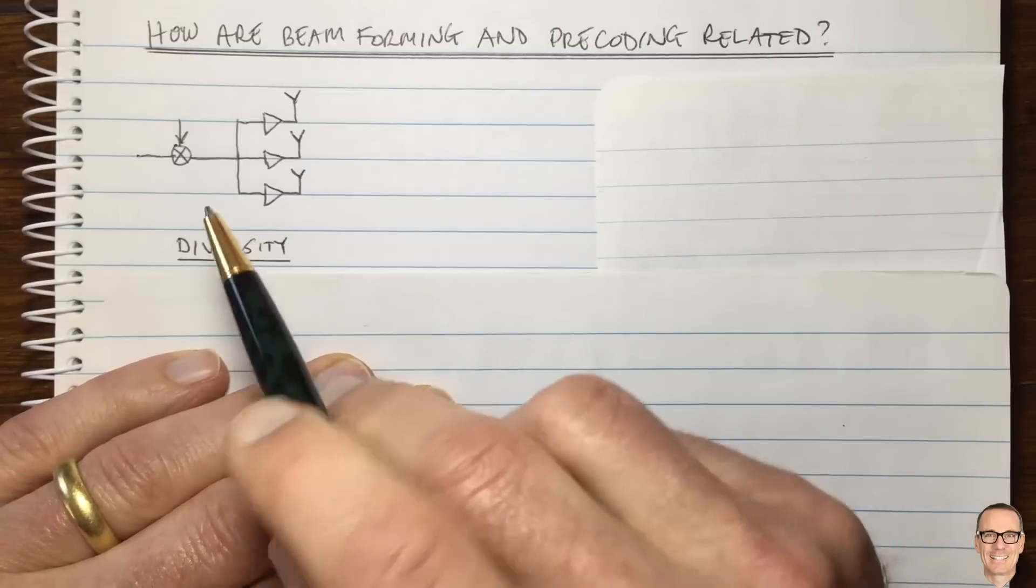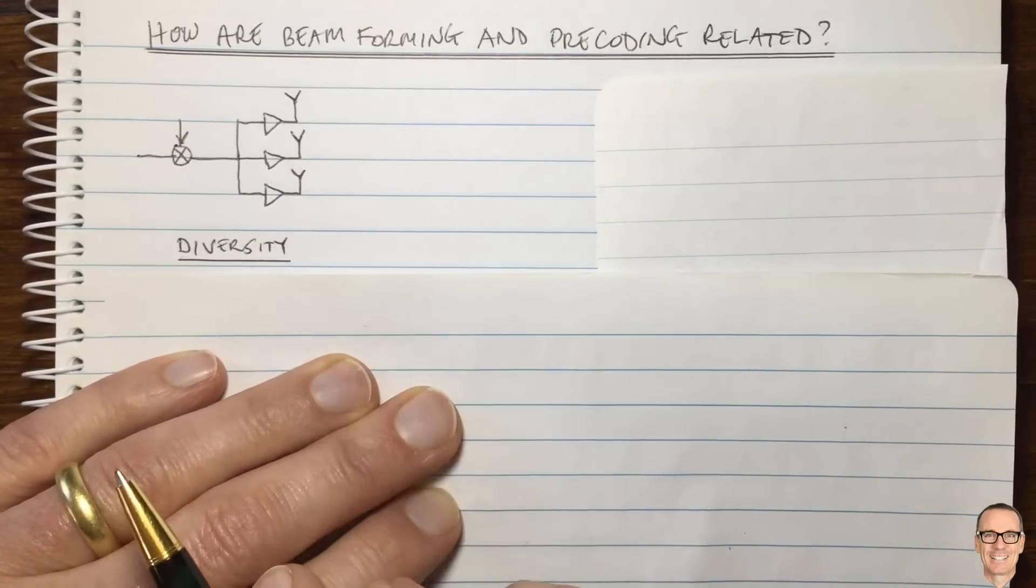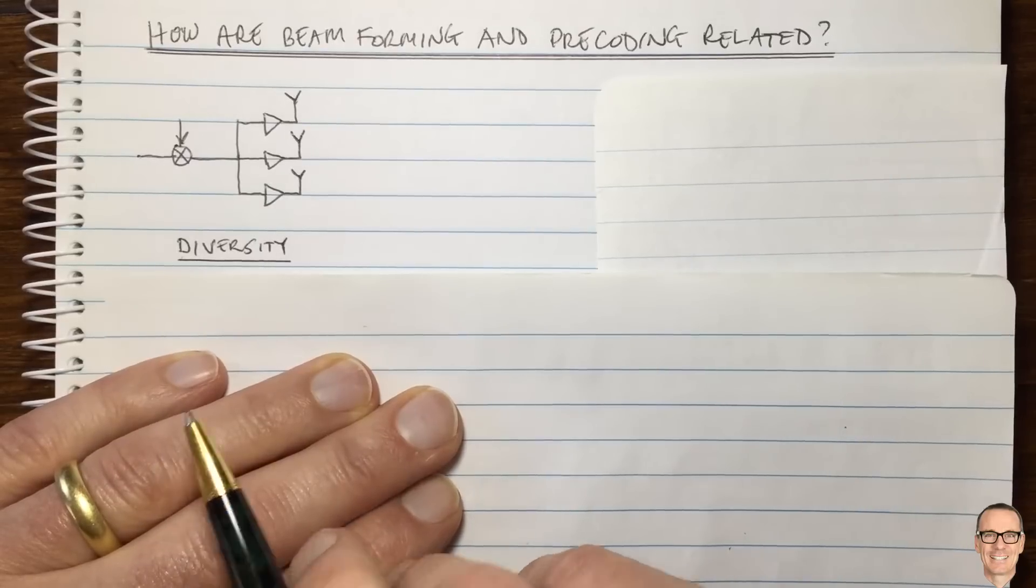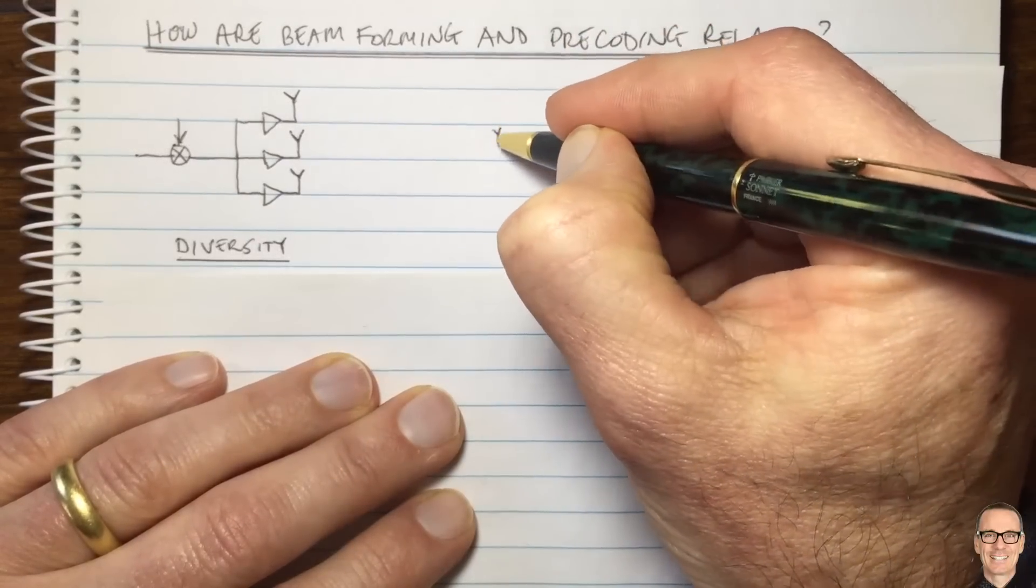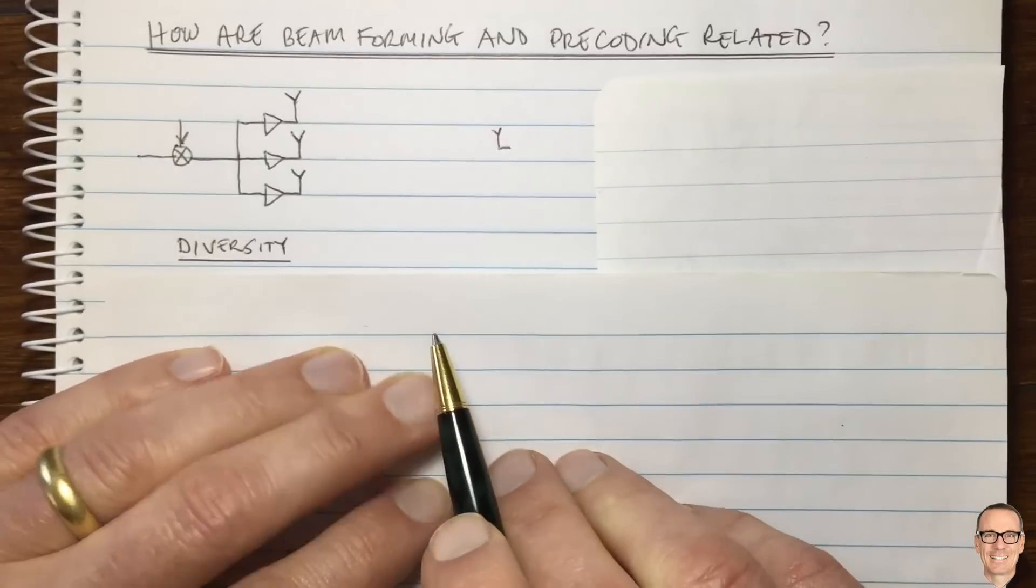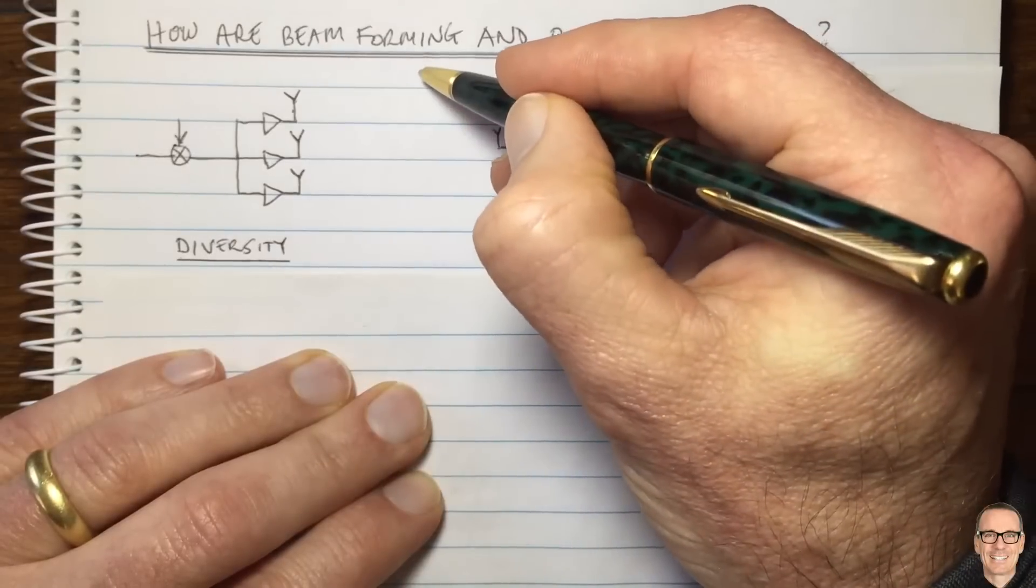Where they all share the mixer, effectively what they're doing is providing different versions of the same signal. So if we had a receive antenna over here, then if there was a problem with the path from the first antenna, for example...